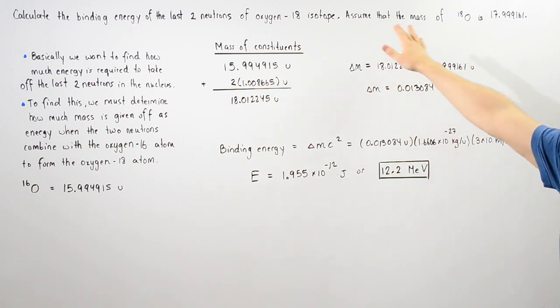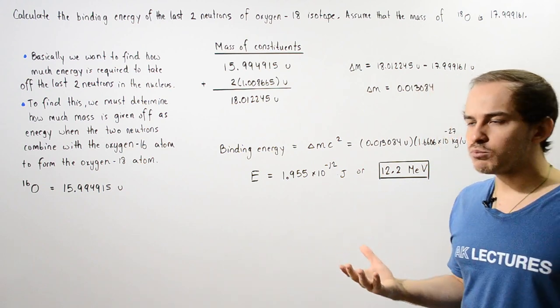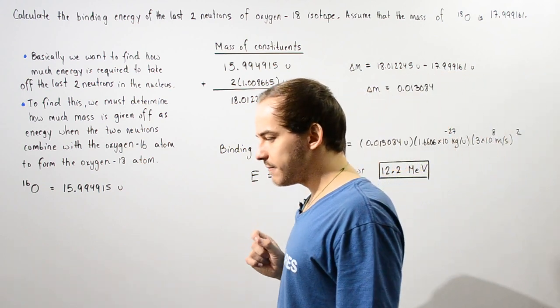We're assuming that the mass of this isotope is 17.99161 unified atomic mass units. The way we're going to solve this problem is the following.